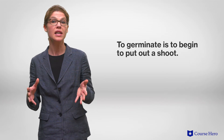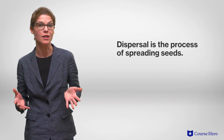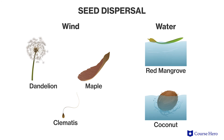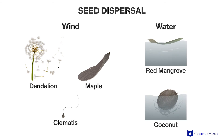Once a seed forms, it must reach fertile soil and germinate, meaning it begins to put out a shoot. The process of spreading seeds is called dispersal, and seeds disperse by various means. The seeds of dandelions and cottonwoods, for example, are carried by the wind to a new location, but the seeds of water lilies and coconuts are usually dispersed by water movement. Frequently, animals also play a role in distributing seeds — for example, some seeds attach to animal fur or pelts and are carried away from parent plants before falling off or being rubbed off.